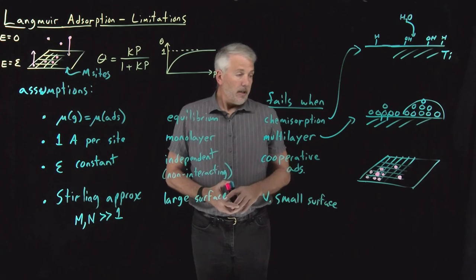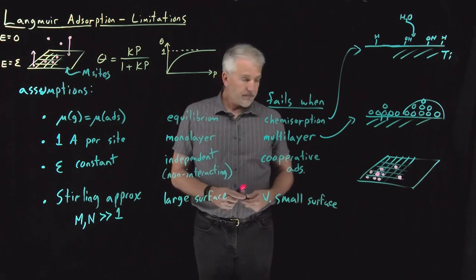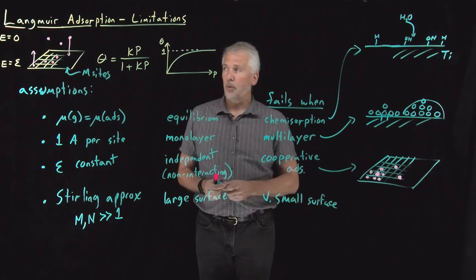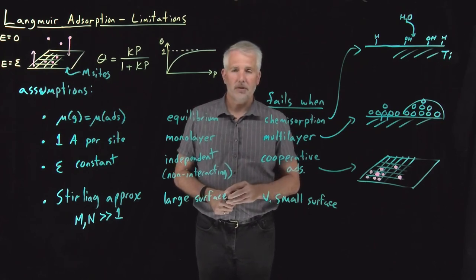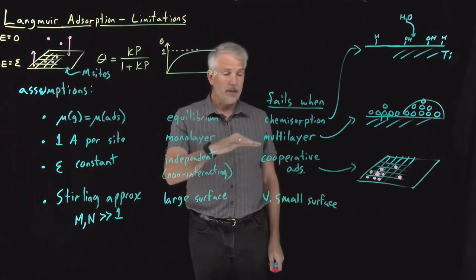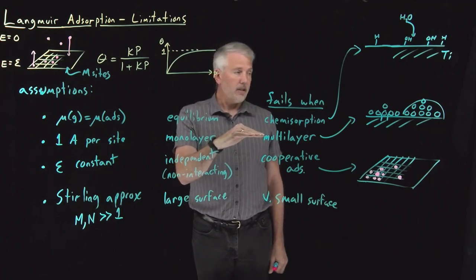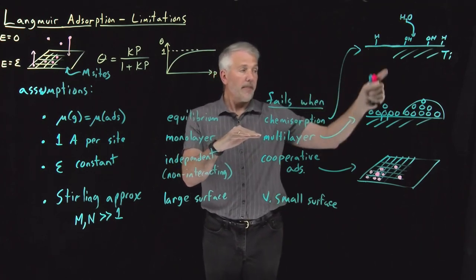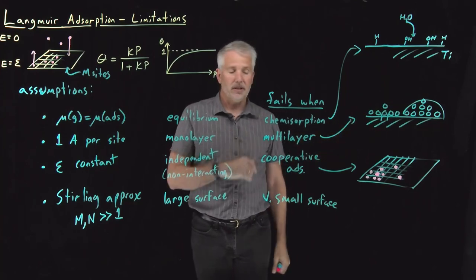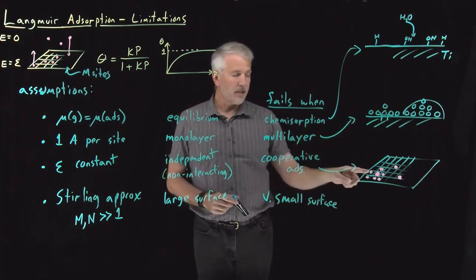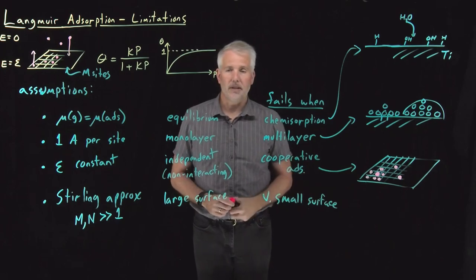So this sounds kind of depressing. We've got all these different mechanisms by which the Langmuir adsorption model can fail. Some of these are very common. Multilayer adsorption is very common when for a species like water that has favorable interactions with itself. Cooperative adsorption is also very common depending on the sites to which the molecules can bind on the surface.